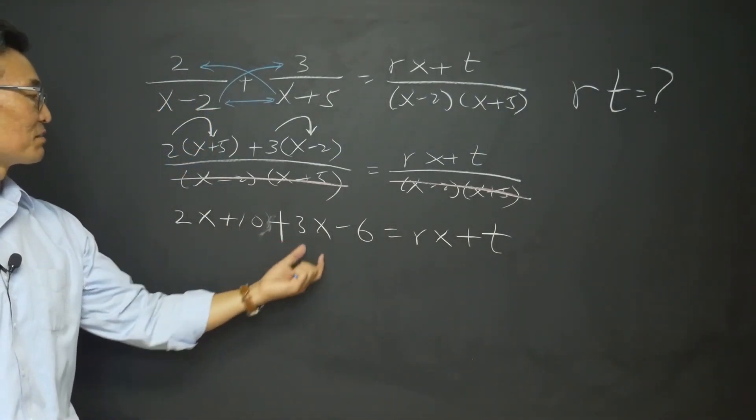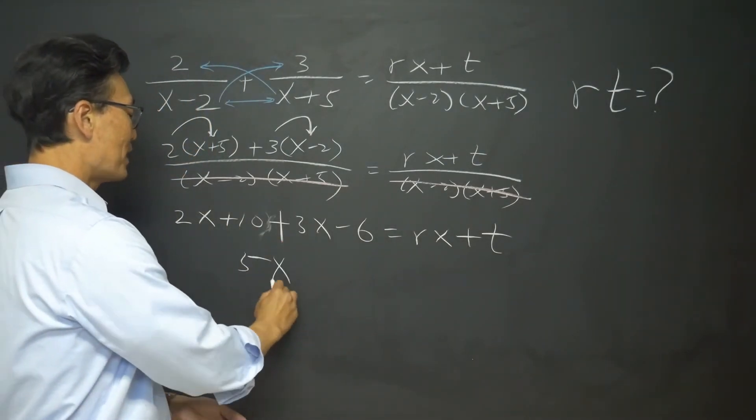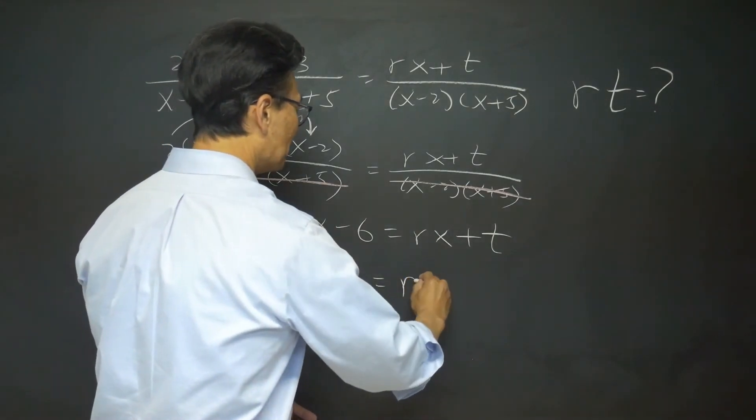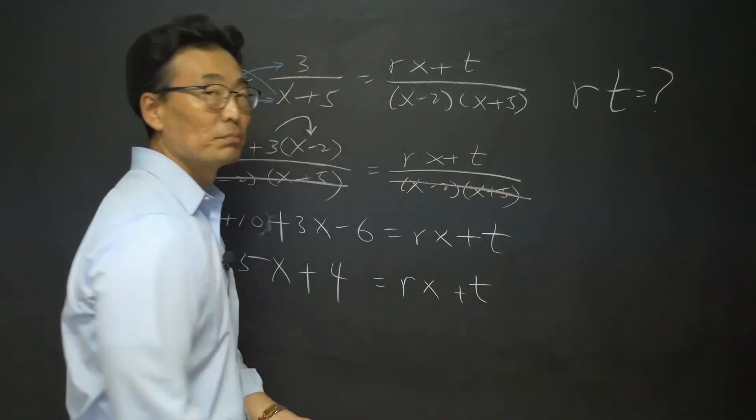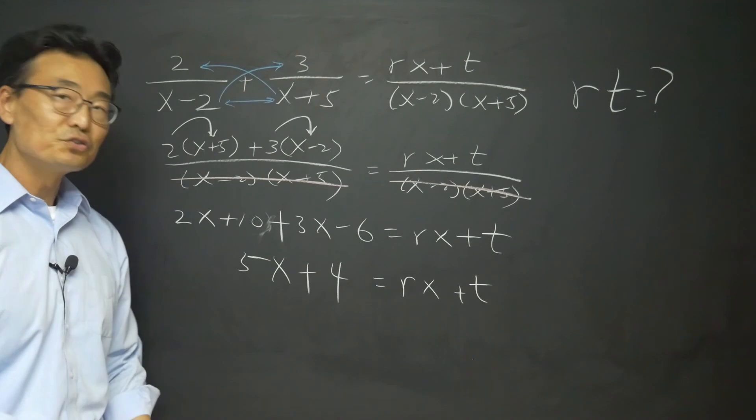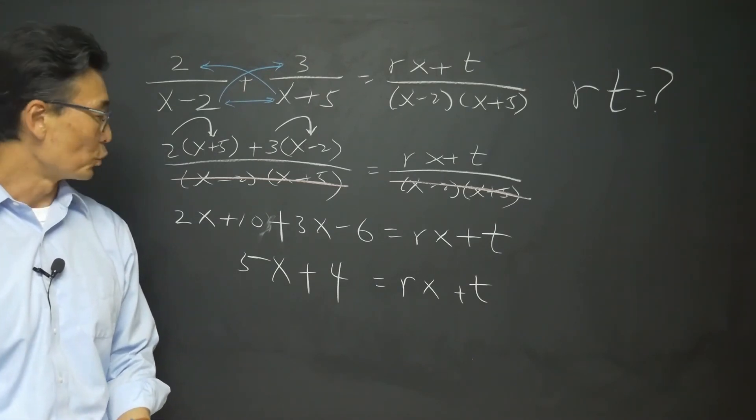Let's go ahead and combine the 2x and the 3x, so we get 5x. 10 minus 6, we get a 4, and that's equal to rx plus t. Rather than using any equation, all you gotta do is match it up. What do I mean? The 5 is in front of the x, r is in front of the x, so that means r equals 5.